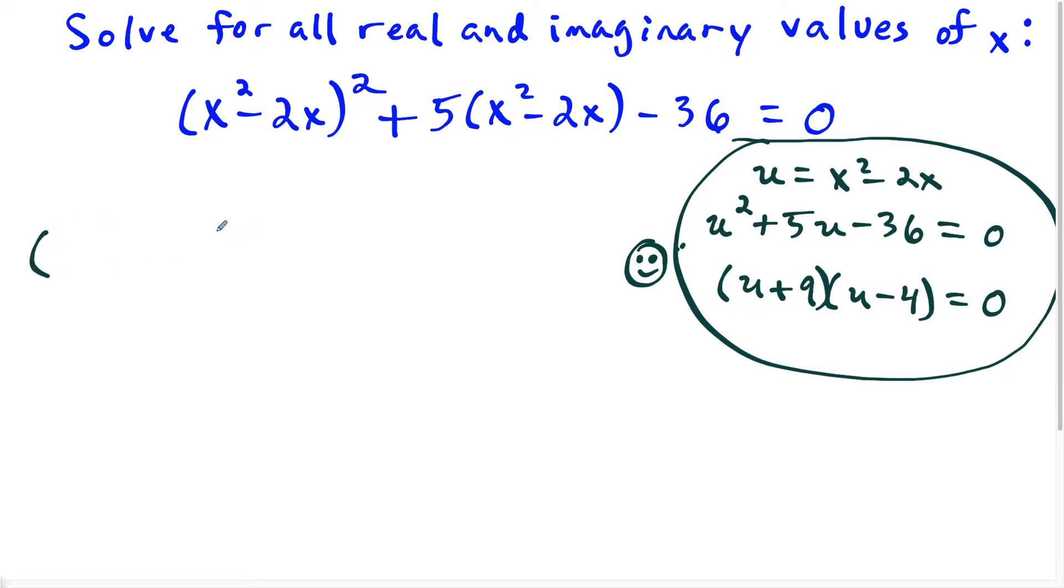So the process is still the same that I have two factors that are going to multiply to zero, and I'm going to have a plus 9 and a minus 4. But then the only catch is that instead of writing x plus 9, x minus 4, is that the entire term being squared is x squared minus 2x. So in a sense, I'm replacing the u with x squared minus 2x. So I'm going to have x squared minus 2x plus 9, and then I would have x squared minus 2x minus 4.